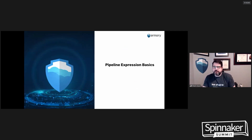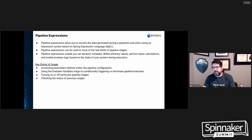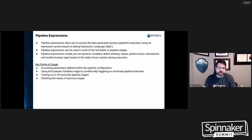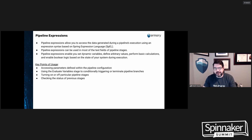To start off, we'll go through pipeline expression basics. A pipeline expression allows you to access the data generated during a pipeline's execution, using an expression syntax based on Spring Expression Language. A lot of folks refer to this query syntax as SpEL, but inside Spinnaker it's an implementation of SpEL that gives the pipeline expressions capability — it's built on SpEL but not a direct implementation, so not every feature is available, but most are. Pipeline expressions can be used in most text fields of a pipeline stage, and if you don't see a text field, you can edit the pipeline JSON directly.